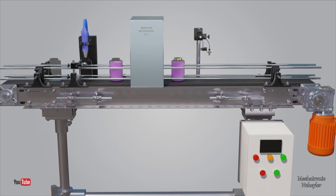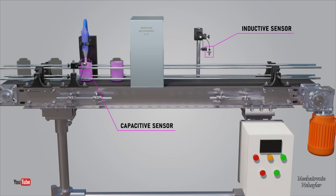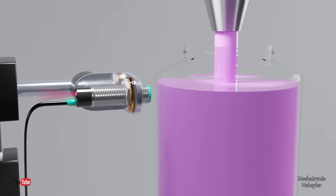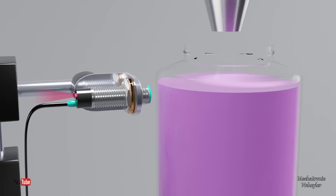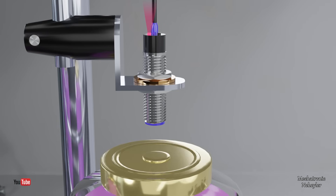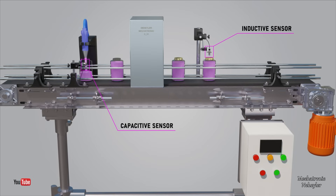Sensors are used in almost all industrial processes. Capacitive sensors and inductive sensors are some of them. In this case, the capacitive sensor detects the filling level of the liquid, while the inductive sensor detects if the containers are covered. Let's take a closer look at how the different types of capacitive and inductive sensors work, and some of the ways these sensors are used in automation.